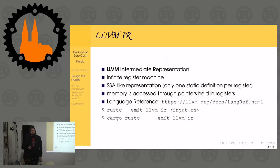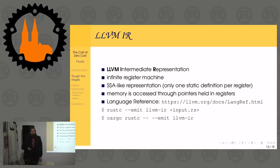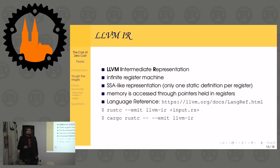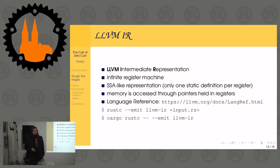Other than variables, LLVM IR can access memory via pointers held in registers - pretty much like C or assembly. Stack memory is accessed via a call called `alloca`, which gives you a pointer. That pointer is stored in a variable, and then you do explicit load and write calls on that pointer to actually access memory.